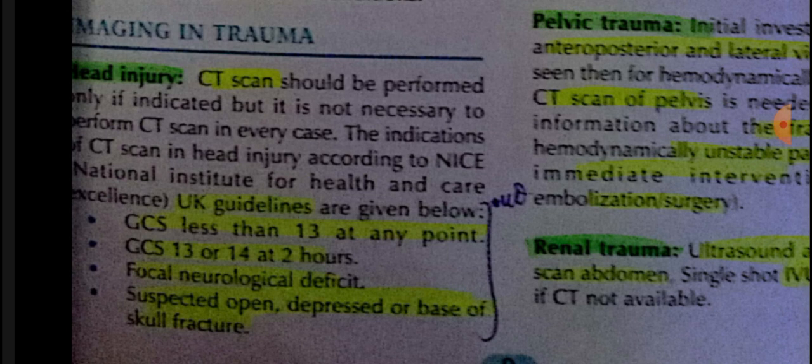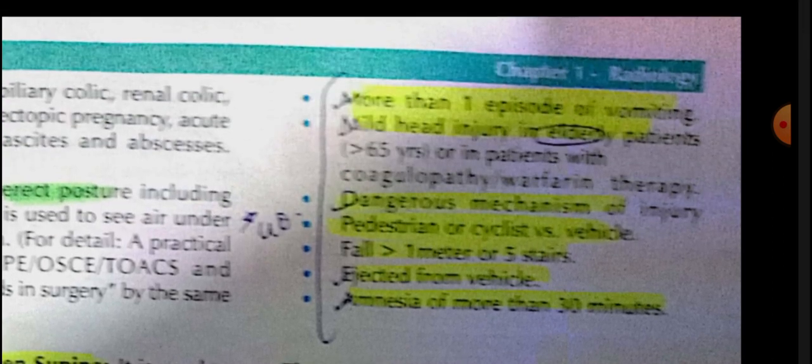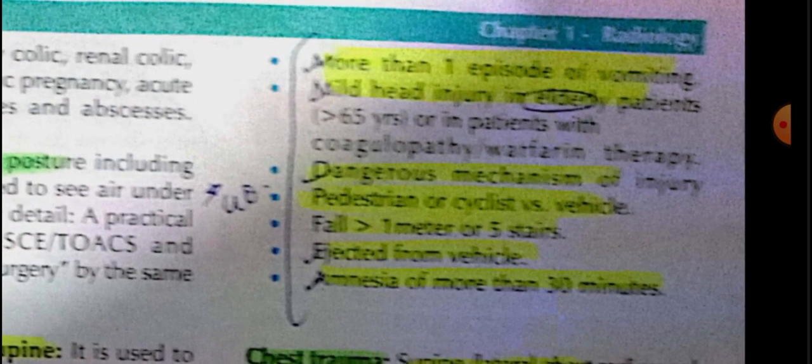After imaging, when a trauma patient comes with head injury, we assess CT scan coverage. If the Glasgow Coma Scale is less than 13, or GCS is 7, CT scan is mandatory. Similarly, if GCS is 13–14 and persists for 2 hours, CT scan must be done. Focal neurological deficit — such as a limb not functioning — also requires CT scan. Depressed skull fracture also warrants CT scan. One episode of vomiting is an important indicator. Mild head injury in elderly patients is very significant and always requires CT scan.